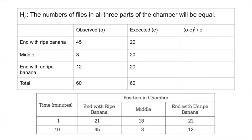Our expected is 20 in every chamber. And our observed minus expected squared over the expected is going to be 31.25 for the ripe banana, 14.45 for the middle, and 3.2 for the unripe banana. And the total if you add these all up is going to be 48.9.